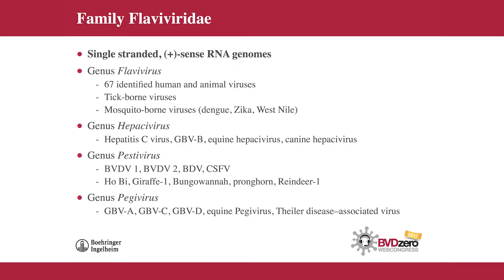The genus Pestivirus is the group we know well because BVD virus is the prototype virus in this group. There are four distinct species of viruses in the Pestivirus genus: BVD1 and BVD2 each have their own distinct species recognition, along with border disease virus and classical swine fever virus. There are other viruses that have not yet been given their own species designation, though they are distinct genetically, and likely in the future some will achieve that status.